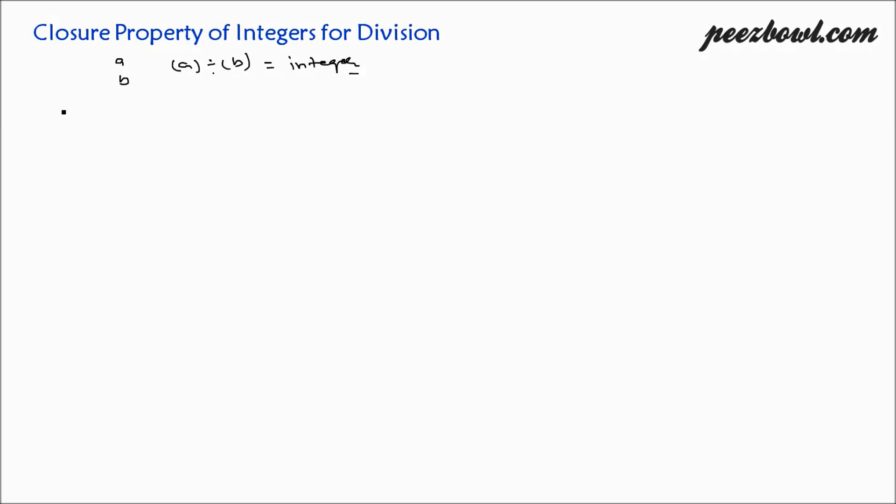Let us say we are putting negative 4 at the place of a and 8 at the place of b. Let us divide them together. a divided by b equals negative 4 divided by 8. This equals negative 4 upon 8, which is negative 1 upon 2. So this is definitely not an integer because this is a fraction and a fraction is not an integer.